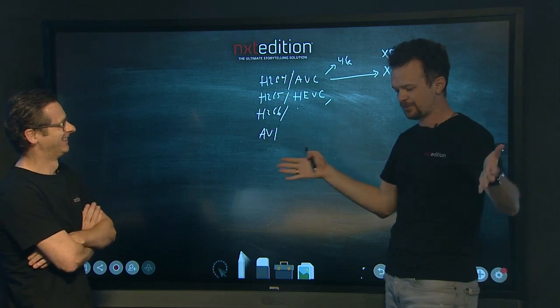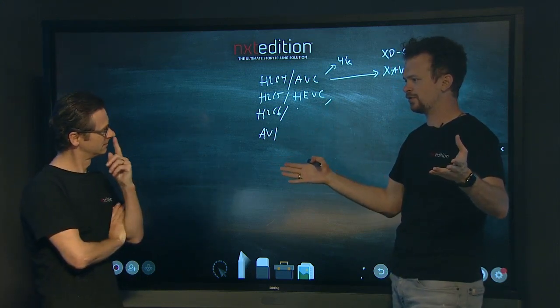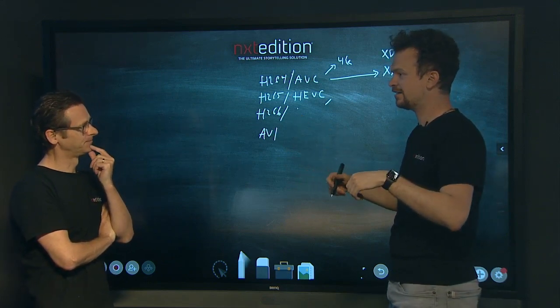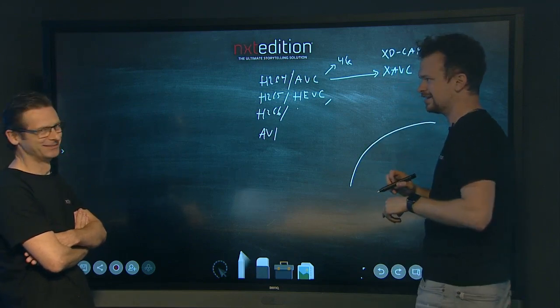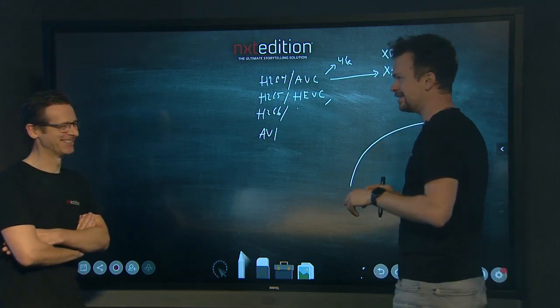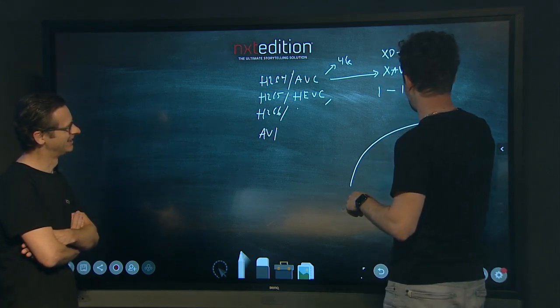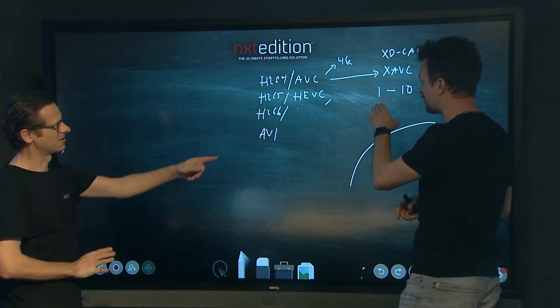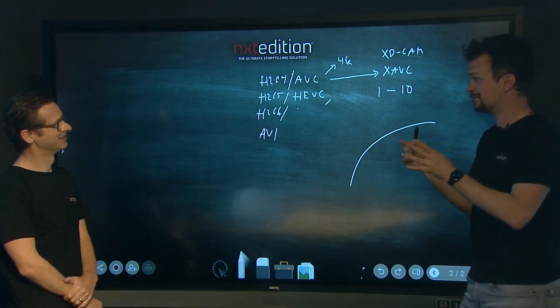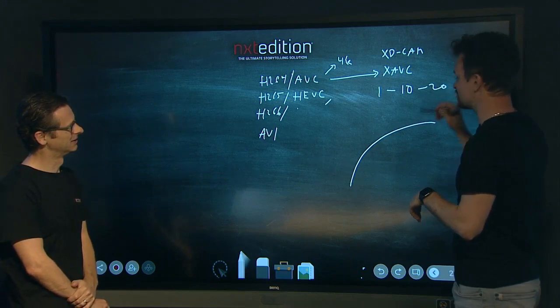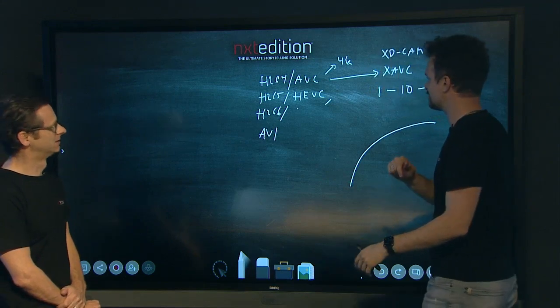So, you know, the longer GOP you have, the better you can compress it. Yeah. But also it takes longer to seek. Okay. And the, you know, return on investment, so to say, is a logarithmic curve, right? Now he's going to... So, you know, the difference between having one and 10, you know, the compression efficiency between having a GOP of one... I can't see your whiteboard if you stand in front. Yeah. Between one and 10 is huge. Yeah. But between 10 and 20, it's much smaller. Right. Right. Because it's the percentage of I-frames that you have. Okay. Right.